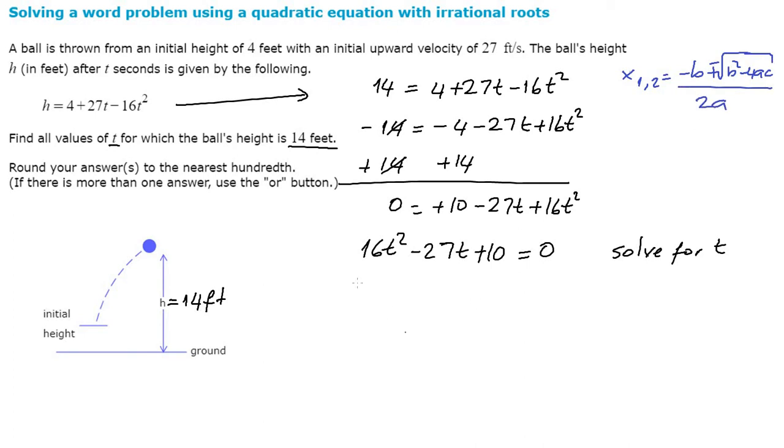I'll be using this formula but in my equation I need to identify my a, b, c values. So if I identify them, a value is equal to 16, this is my a, and b equals negative 27, and c is equal to 10. I'm going to write down here: a equals 16, b equals negative 27, and c equals 10.